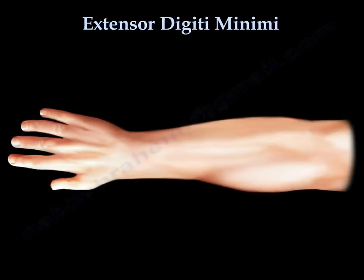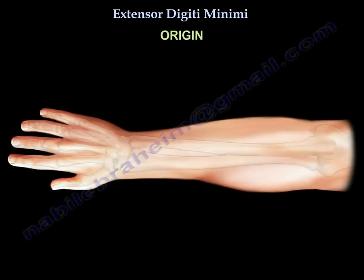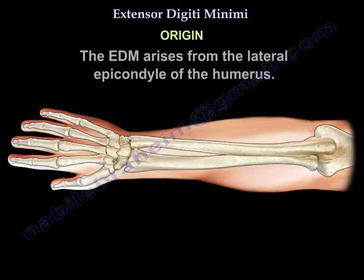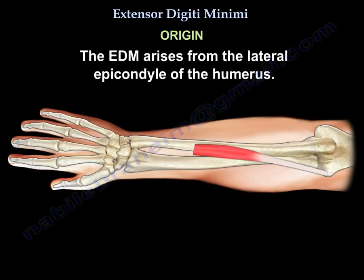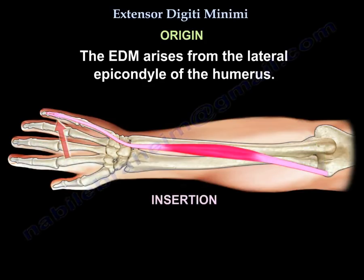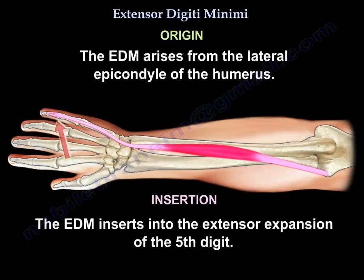Extensor digiti minimi: origin. The extensor digiti minimi arises from the lateral epicondyle of the humerus. Insertion: it inserts into the extensor expansion of the fifth digit.